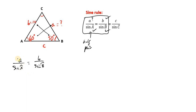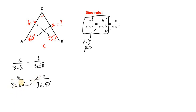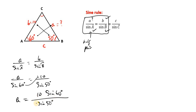So A is what we're trying to find. A divided by the sine of the angle it faces, 60 degrees, equals B which is 10, over the sine of the angle that B faces, which is 50 degrees. In order to find A, we transpose sine 60 degrees from the denominator on one side to the numerator on the other side. So A equals 10 times sine 60, divided by sine 50. Putting this in our calculator will give us the answer.